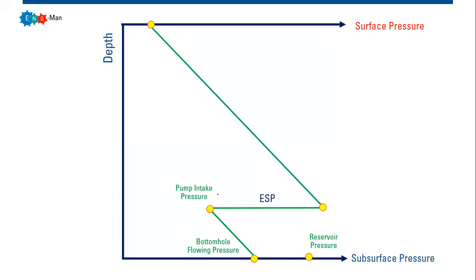The third pressure point is the pump intake pressure. From the bottom hole flowing pressure at the perforation side, the fluid flows upward and arrives at the pump intake level. Due to the elevation difference, there is a pressure drop along this path, which is why the pump intake pressure — or PIP — is lower than the bottom hole flowing pressure.